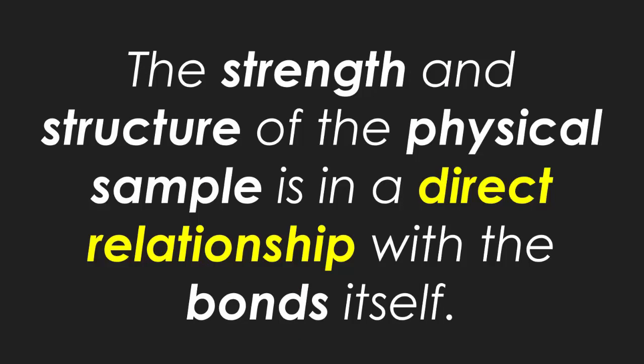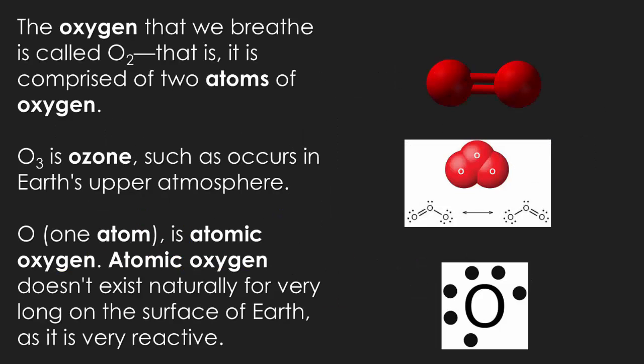The strength and structure of the physical sample is in a direct relationship with the bond itself — do not forget this. The oxygen we breathe is O2, comprised of two atoms of oxygen. Ozone, which is O3, occurs in the Earth's upper atmosphere. Atomic oxygen doesn't exist naturally for very long on Earth's surface as it is very reactive. Even though ozone and O2 are comprised of the same atoms, they have a different structural formula, and because of that different shape, they also react differently in chemistry.